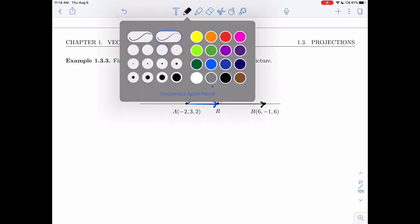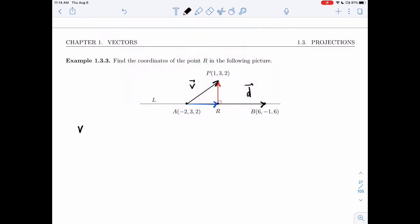All right, so let's look at this. V is AP. That's the vector I want to split. So AP, I'm going to take the coordinates of P minus the ones of A. So 1 minus minus 2, 3 minus 3, 2 minus 2. That's 3, 0, 0. Ain't that nice? All right, so I have a nice vector V, 3, 0, 0.